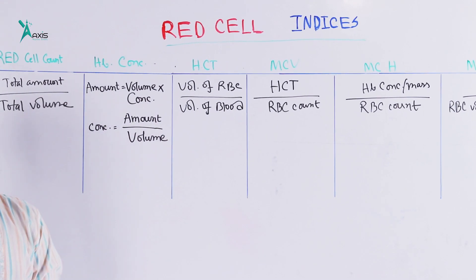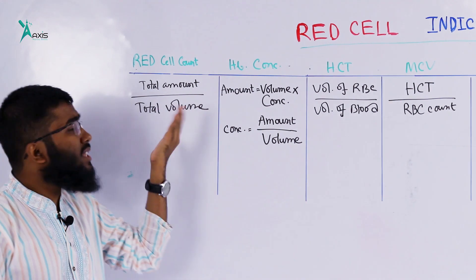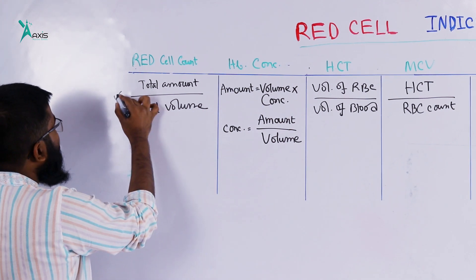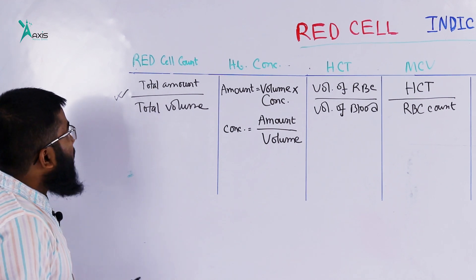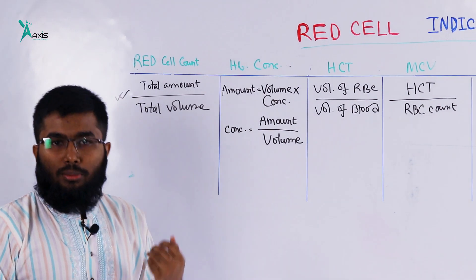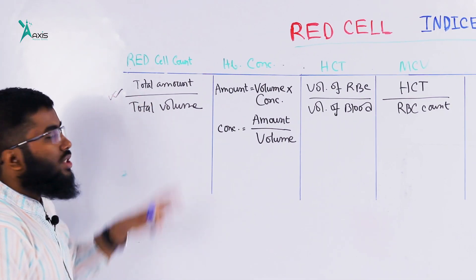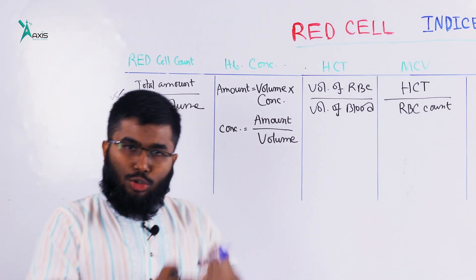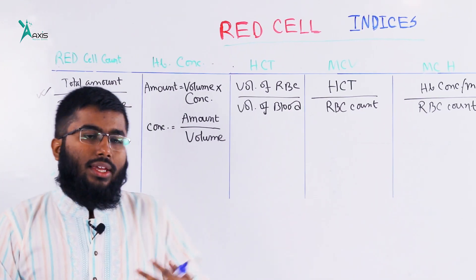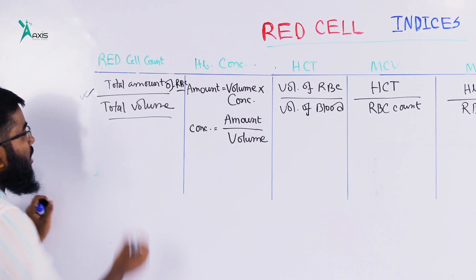Today I will tell you about the red cell count. The RBC count refers to the total number of red blood cells per total volume of blood specimen.